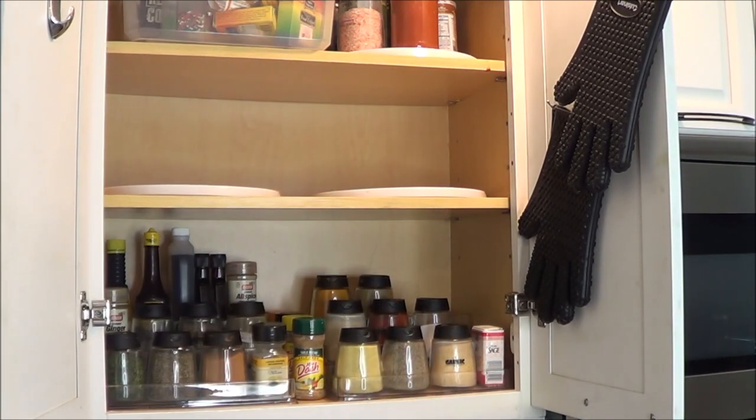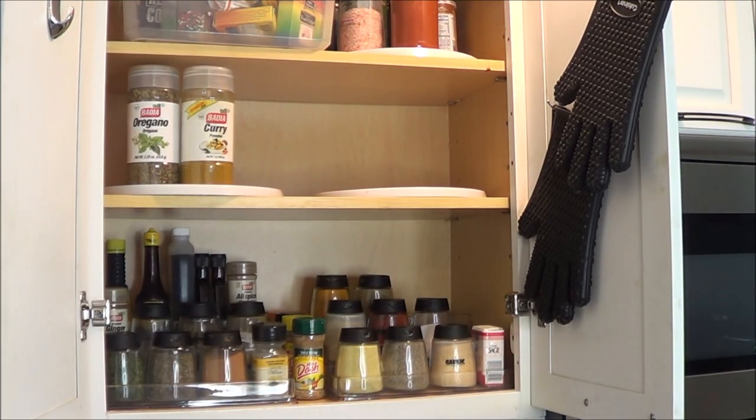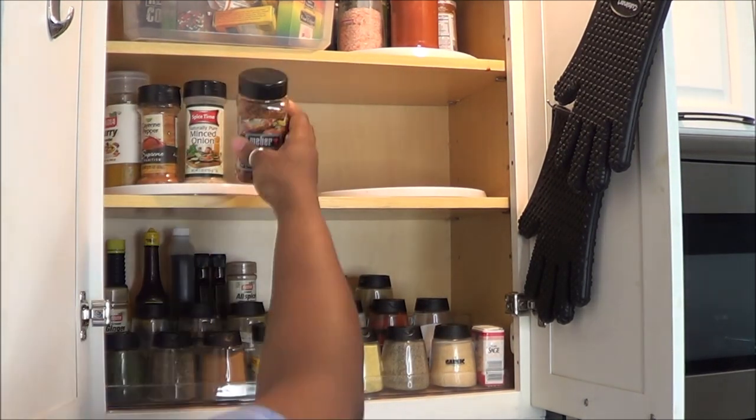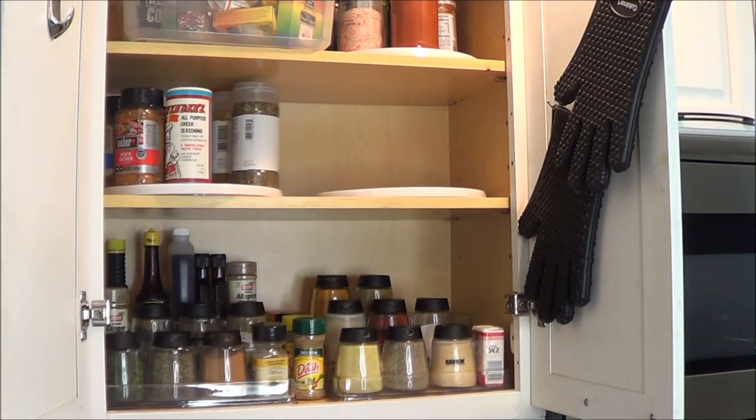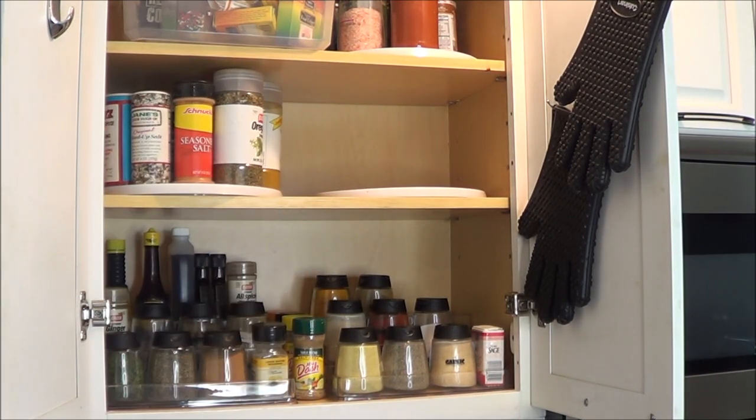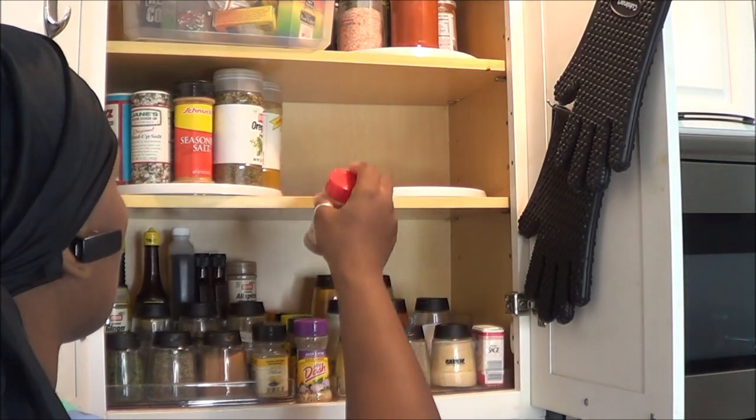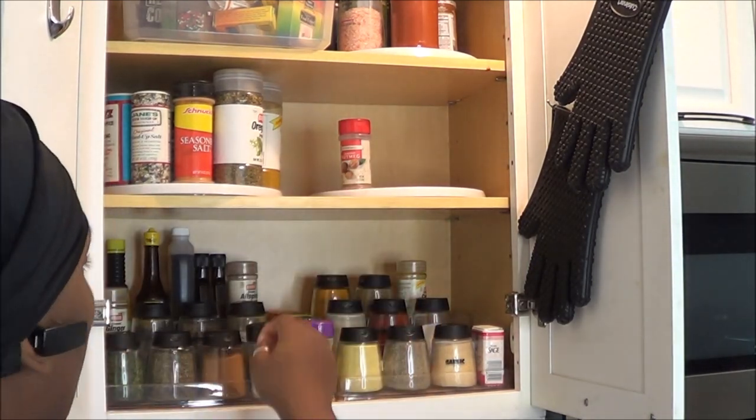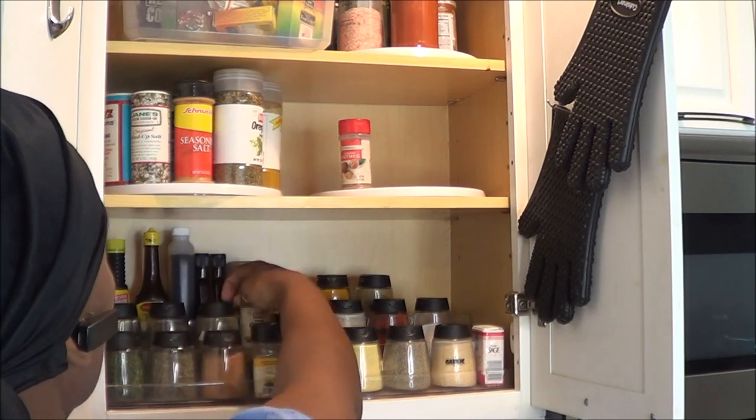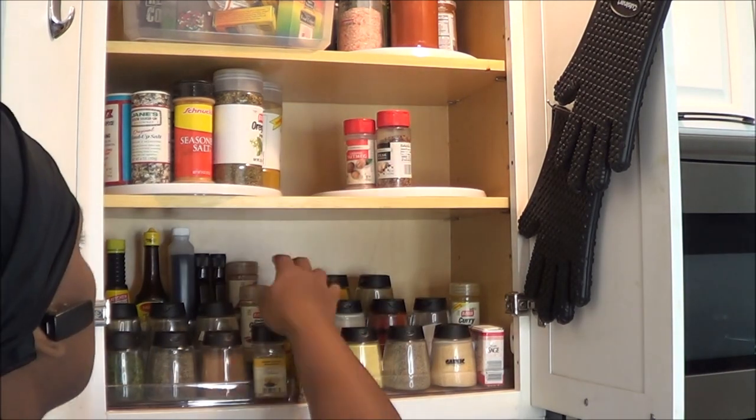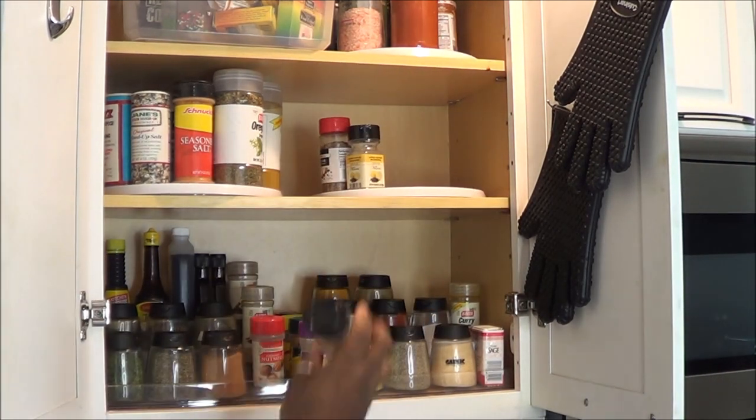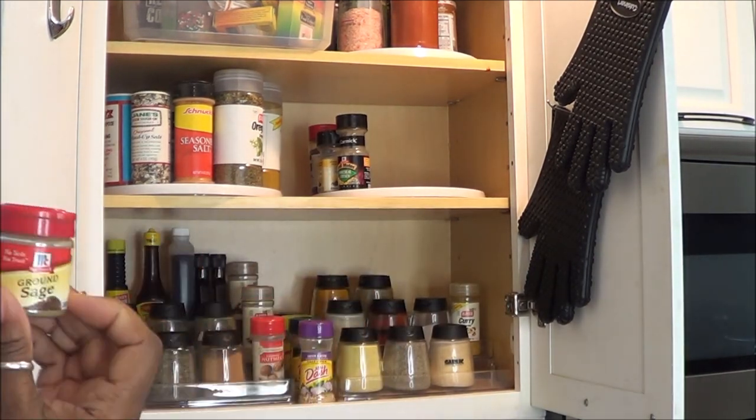And I like to put all of these seasons that I use a lot or maybe that I grab and go throughout the week on there. Now there's space in the middle of the lazy susan. That's where I might hide other items that I don't use as often. So usually I try to keep a lot of my nutmegs and all spices and bacon powders and stuff on the right.